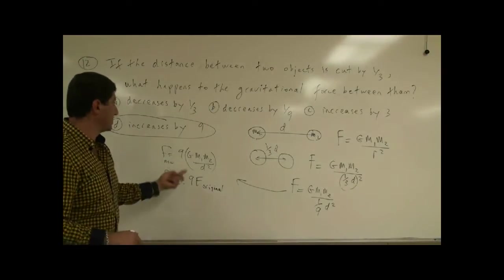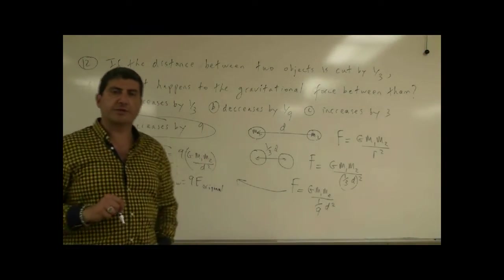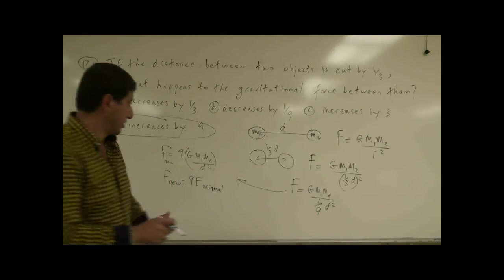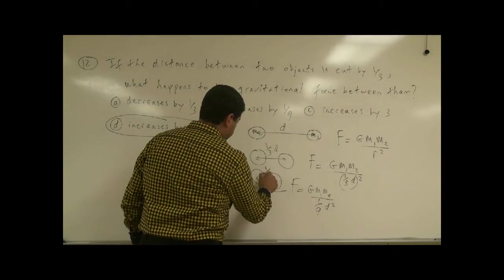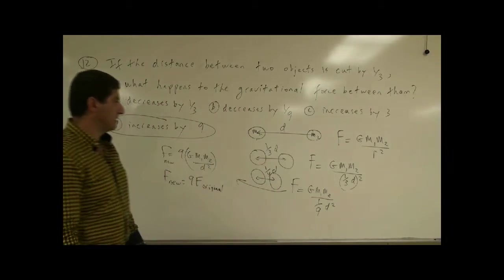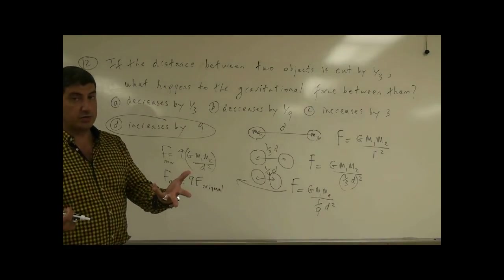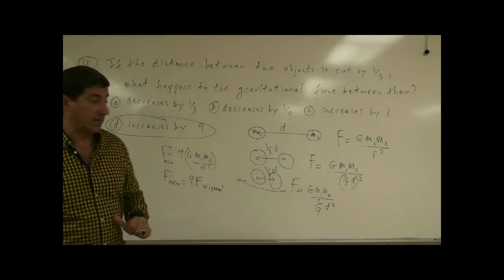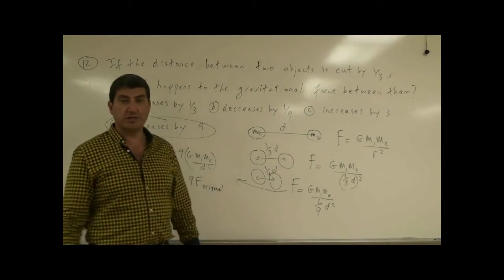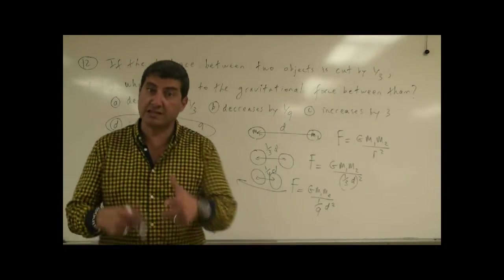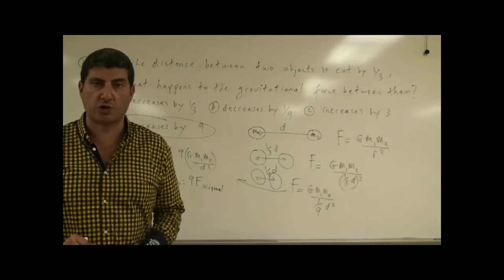So the force here is nine times, the force here is nine times as much as the force there. What would happen if we made them four times as close? So it became here one-fourth D. How much would the force be? Now it would be what? Sixteen times. Sixteen times this force. One-fourth squared is one-sixteenth. The sixteenth goes to the top and becomes sixteen times as strong.